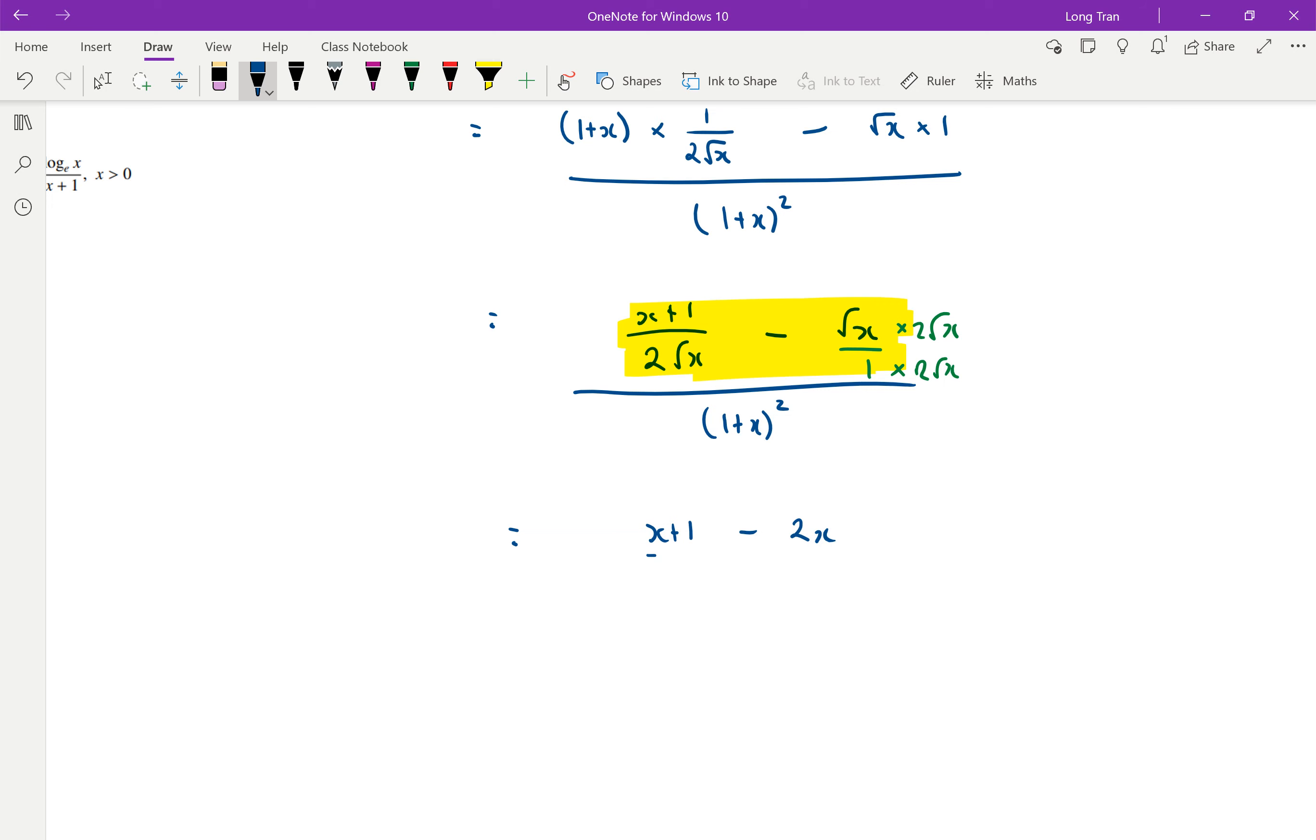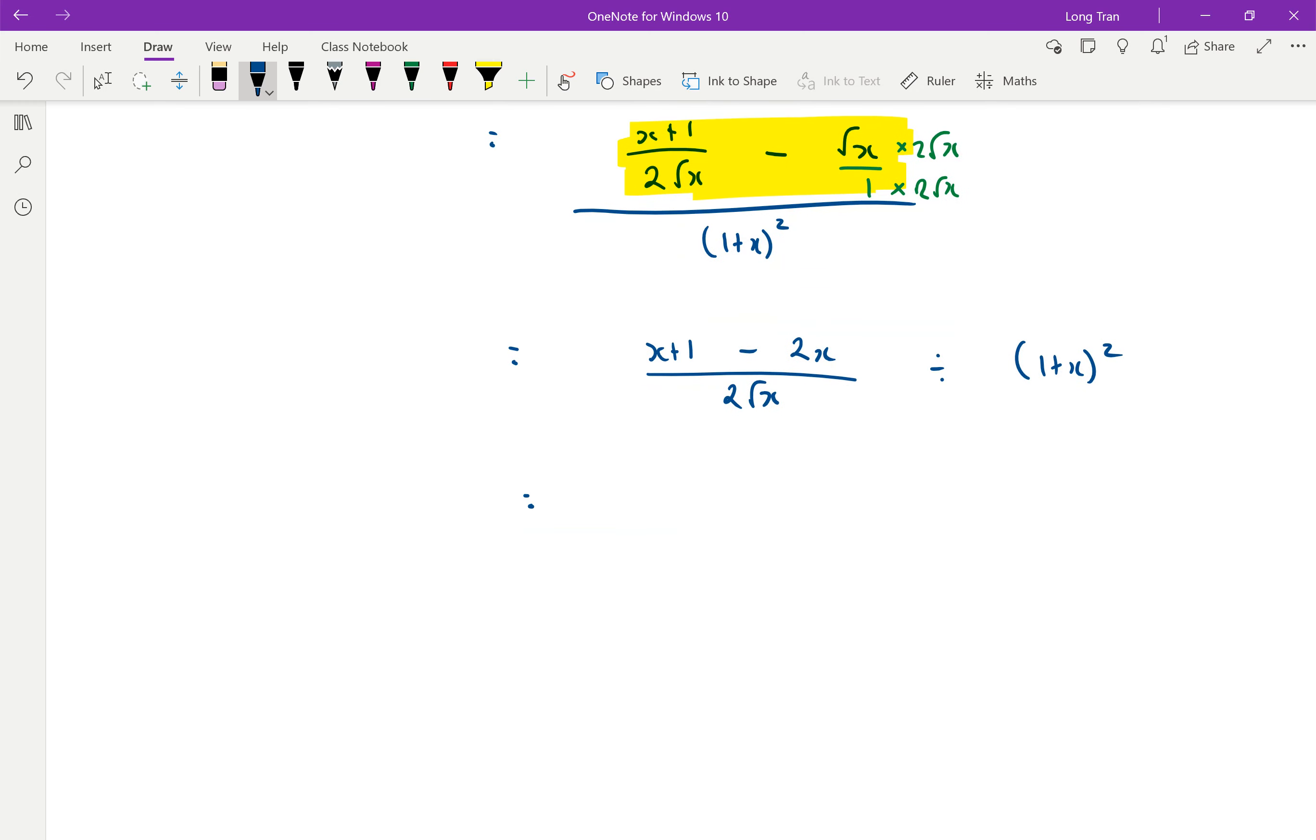And then on the bottom should be 2 root of x divided by 1 plus x squared. So this works out to be what? x minus 2x is negative x plus 1 all over 2 root x times by 1 on 1 plus x all squared. So my answer seems to be what? Negative x plus 1 over 2 root x times 1 plus x all squared.